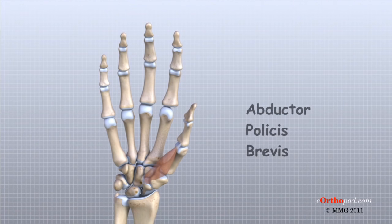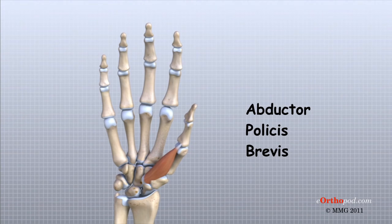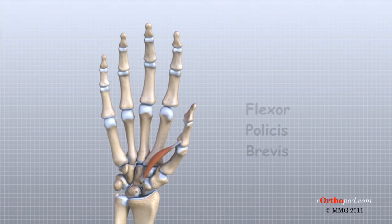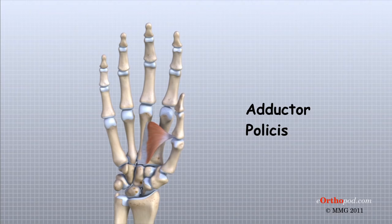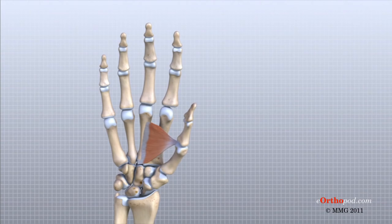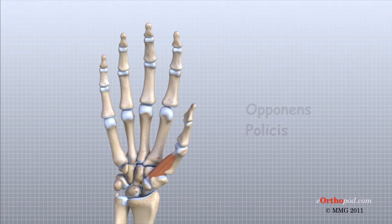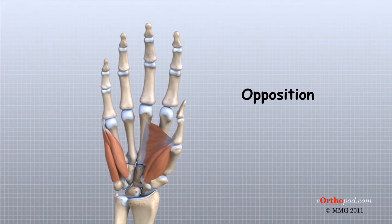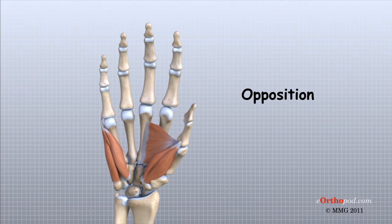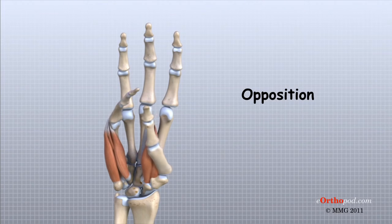The abductor pollicis brevis abducts or moves the thumb away from the midline of the hand. The flexor pollicis brevis flexes or bends the thumb. The adductor pollicis adducts or moves the thumb towards the midline of the hand. The opponens pollicis moves the thumb into opposition — it pulls the thumb out from the palm and turns the pulp of the thumb to face the palm. This is the motion that allows you to place the tip of your thumb against the tip of your little finger.